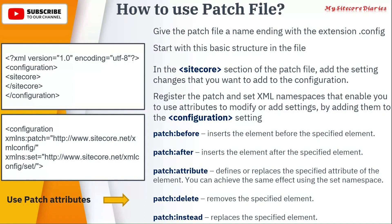If there is any node whose attribute you want to update, or a value you want to set, you use patch:attribute or set. patch:delete will simply remove that element — so if you want to remove something from your configuration, use patch:delete. patch:instead basically replaces the specified element — if you specify anything, it will replace that with the patch:instead content. This is how you should be using the patch files.